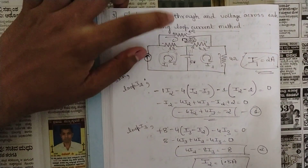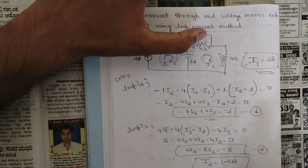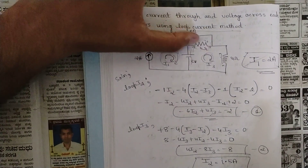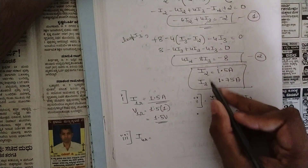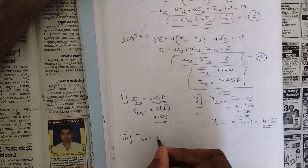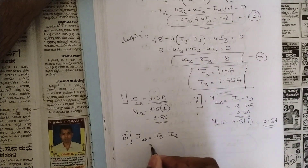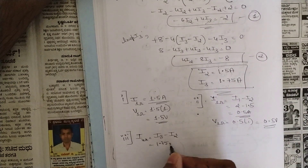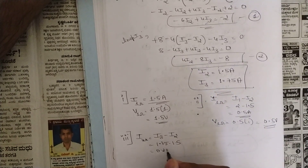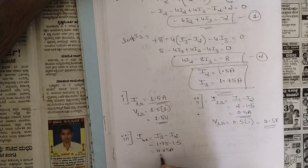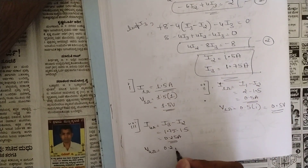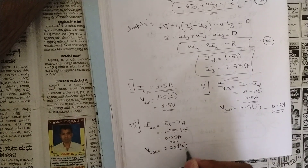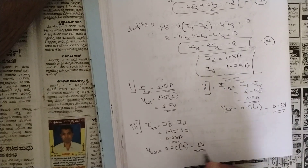For the third resistor, the 4-ohm between loops i2 and i3: since i3 is greater, current = i3 − i2 = 1.75 − 1.5 = 0.25 ampere. Voltage across this 4-ohm = 0.25 × 4 = 1 volt.